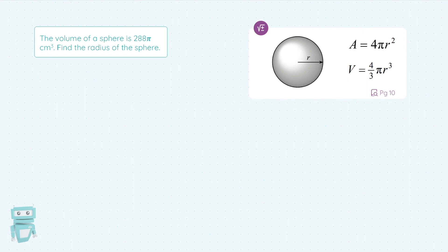In this question, we're given the volume of the sphere in terms of pi to be 288π cm³, and we're asked to find the radius of the sphere. We must identify what formula to use, and on page 10, we see V, which stands for volume, equals 4/3 πr³.